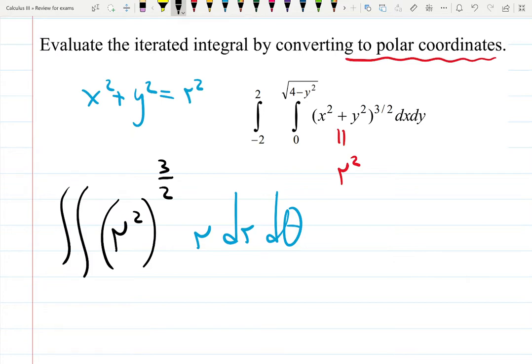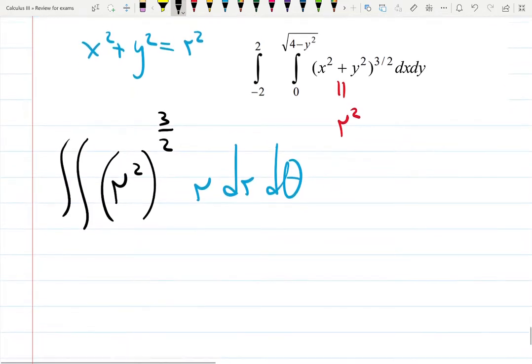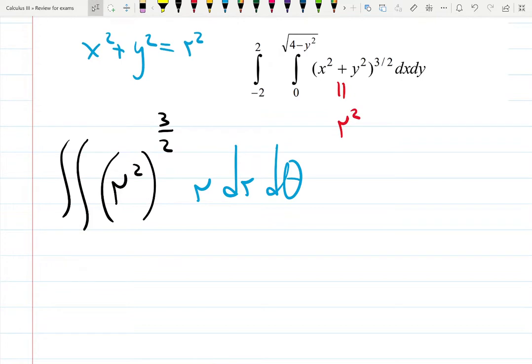That was the easy part and only because we know that x squared plus y squared is r squared. What is happening with the square root and then how should we figure out the shape?